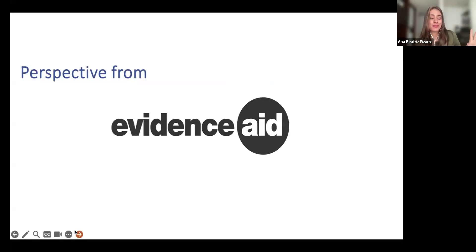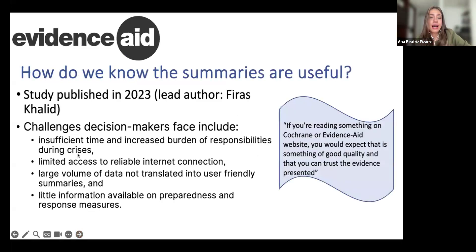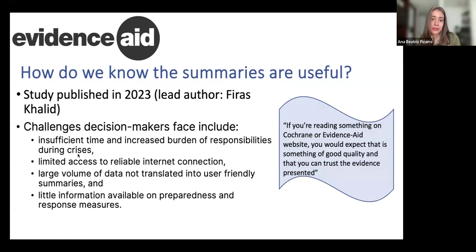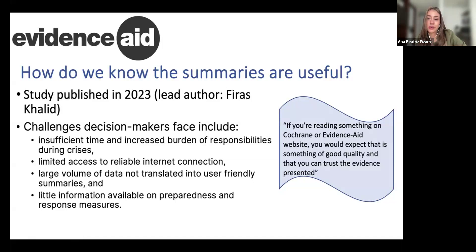Now we're going to explain about the perspective from EvidenceAid. How do we know that the summaries are useful? There was a study published in 2023 by Ferez Khalid as the lead author — I'm going to paste the reference in the chat. Some challenges for decision makers include insufficient time, limited access to reliable internet, large volumes of data not translated into user-friendly summaries, and limited information on preparedness and response measures. If you're reading something on the Cochrane or EvidenceAid website, you expect it to be good quality and that you can trust the evidence presented.